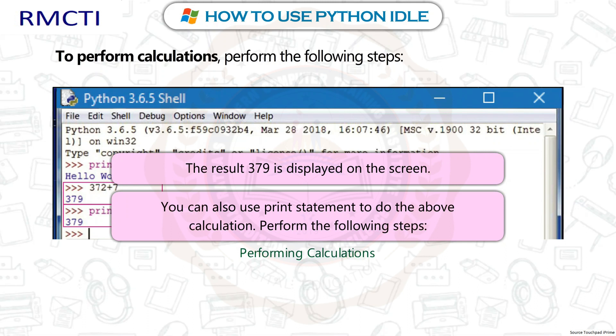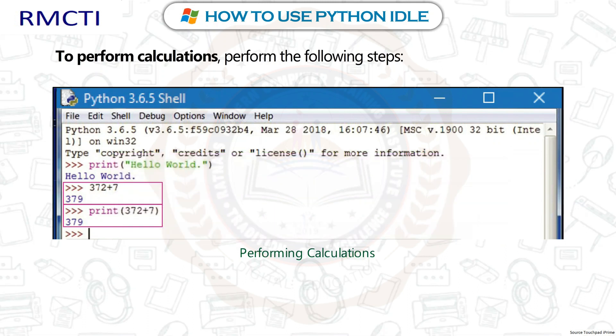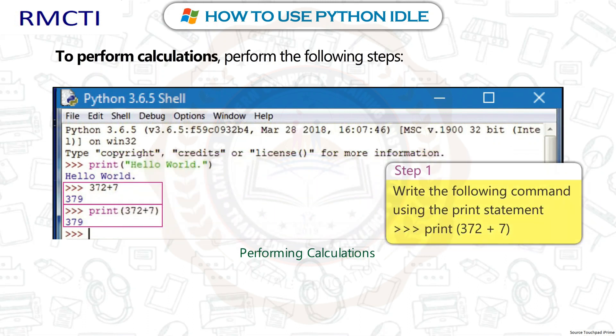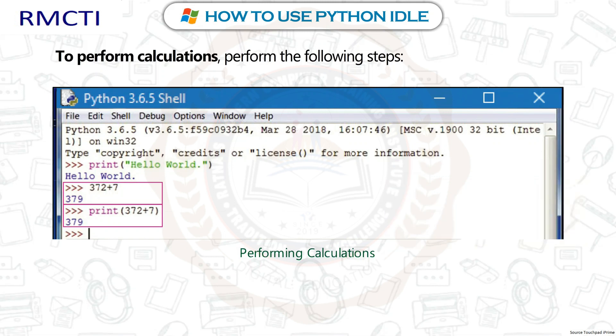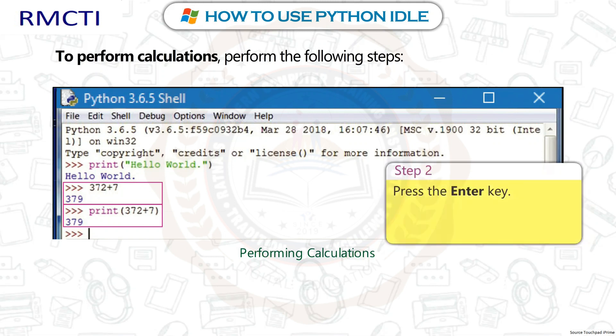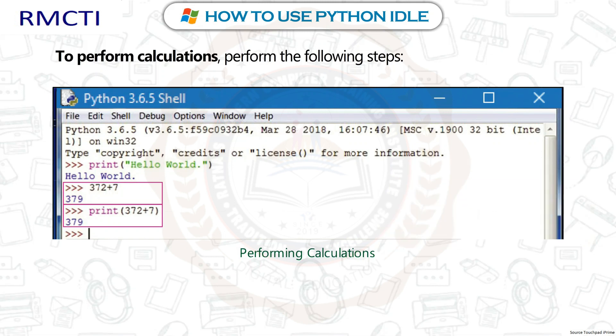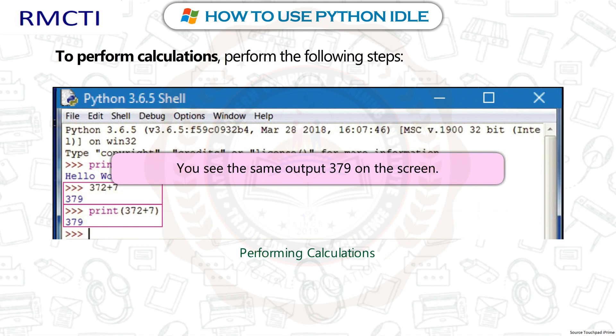You can also use the print statement to do the above calculation. Step 1: Write the following command — print(372 + 7). Step 2: Press the Enter key. You will see the same output 379 on the screen.